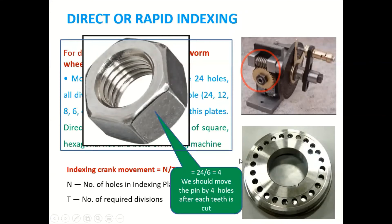So this is how we can use the direct or rapid indexing, which is a very simple method, but there is a limitation here. Means we can't divide into, suppose you want to divide into seven parts or nine parts. So it is not possible in direct indexing.